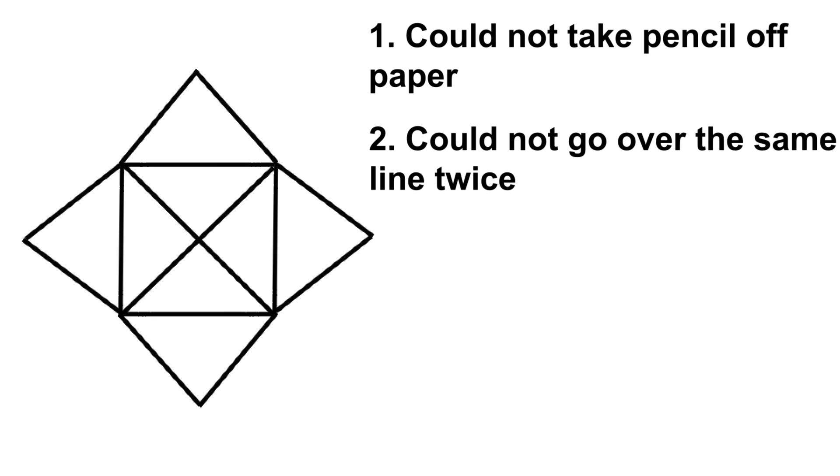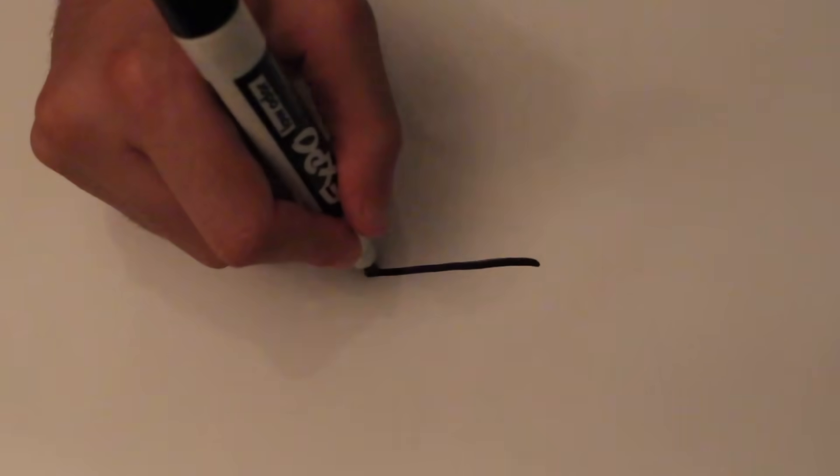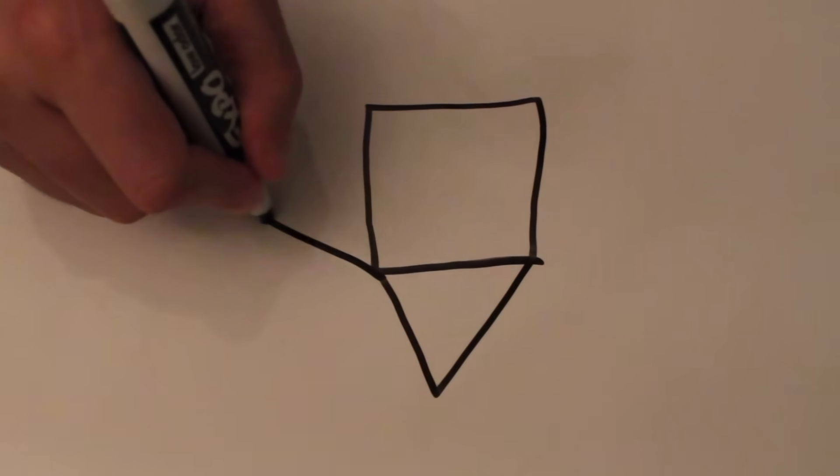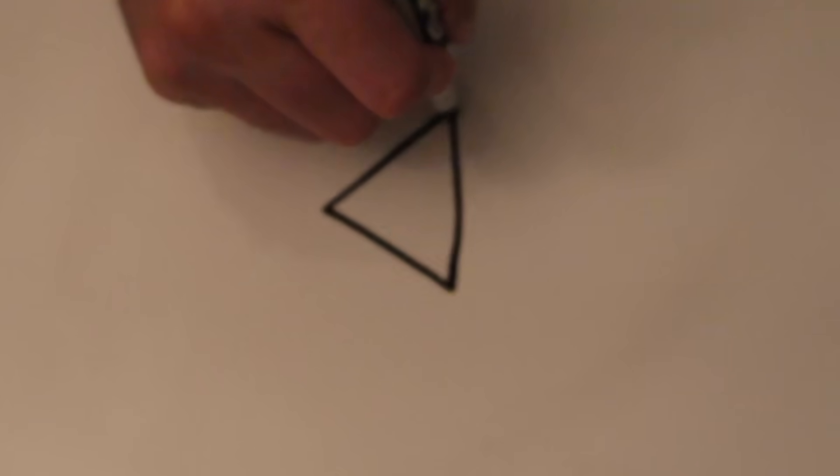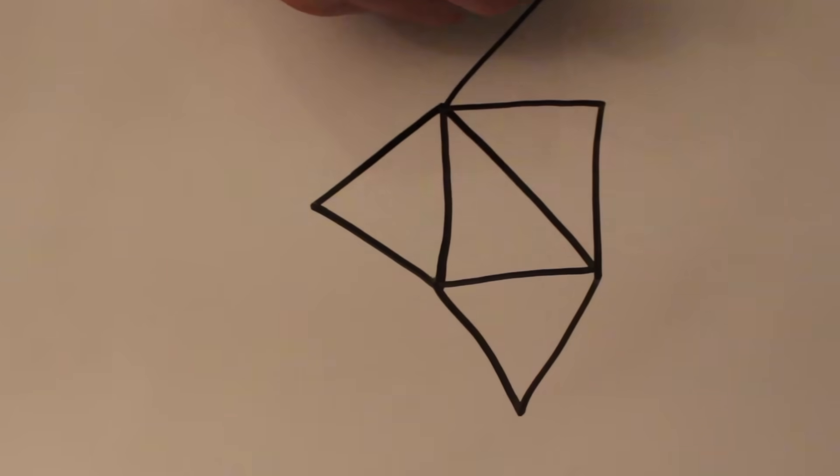This was just randomly brought up, by the way. My friend probably heard it from another friend. But no matter how many times I tried, I could not do it. I was always like one or two lines off, but I could not complete it because it would require me to go over the same line twice. I think I remember this because I tried so many times and it was bugging me. Neither of us knew whether it was impossible or we just couldn't find a way to do it.